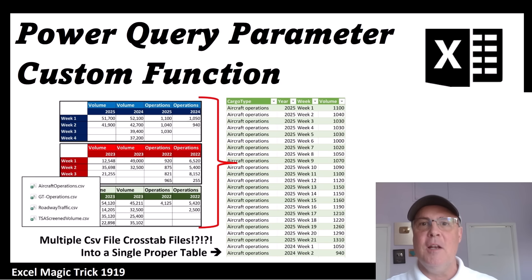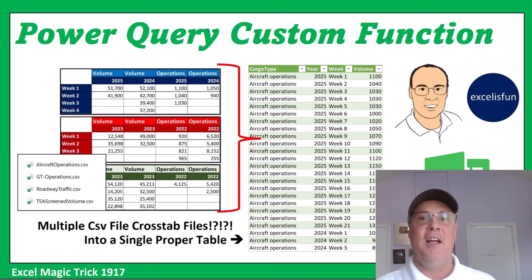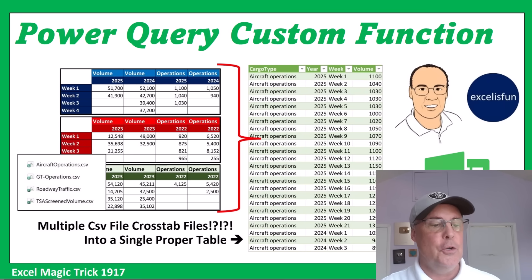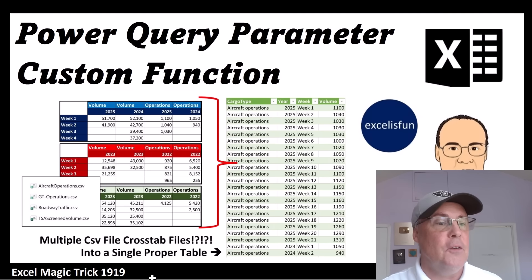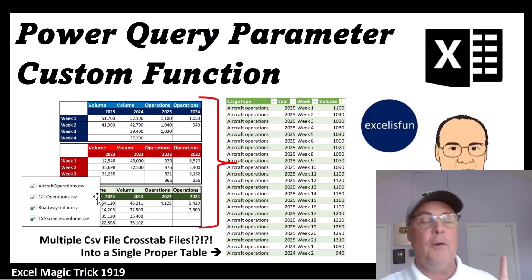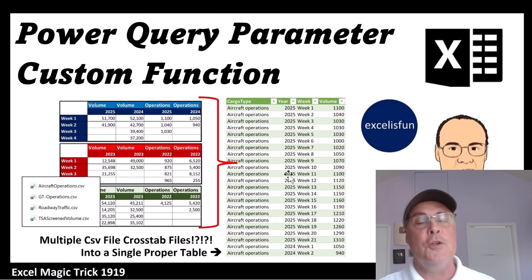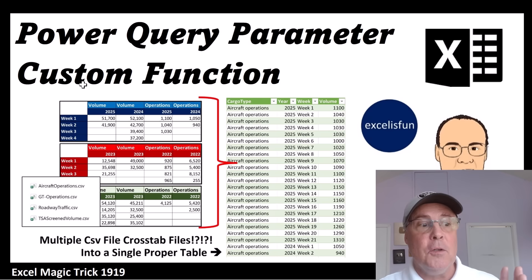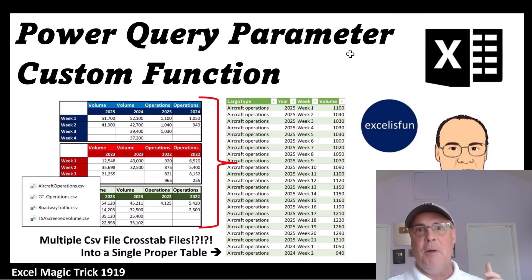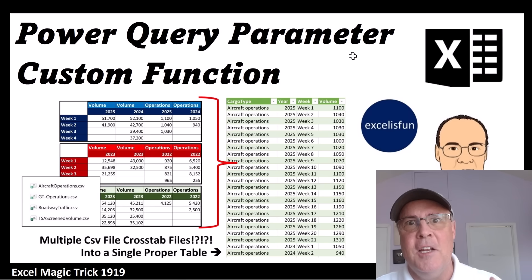Welcome to Excel Magic Trick 1919. This is the third video where we take cross-tabulated tables that are in CSV file form and transform them into a proper data set. In this video, we're going to build a custom function using a parameter, because parameters make it simple to edit if you need to edit later.